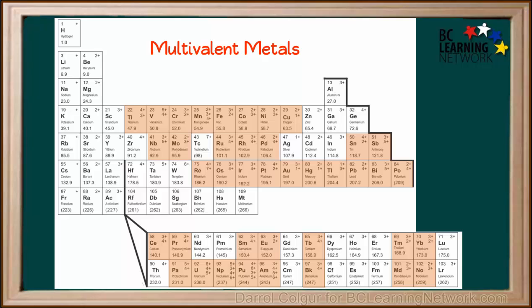On the periodic table you're given, multivalent metals are the ones which have more than one charge in the top right corner. They are shown in this diagram.